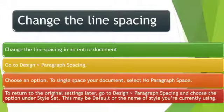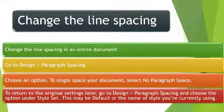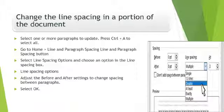To change the line spacing in an entire document, go to Design, then Paragraph Spacing, and choose an option. To single-space your document, select No Paragraph Space. To return to the original setting, go to Design, then Paragraph Spacing, and choose the option under Style Set, which may be Default or the name of the style you are currently using.